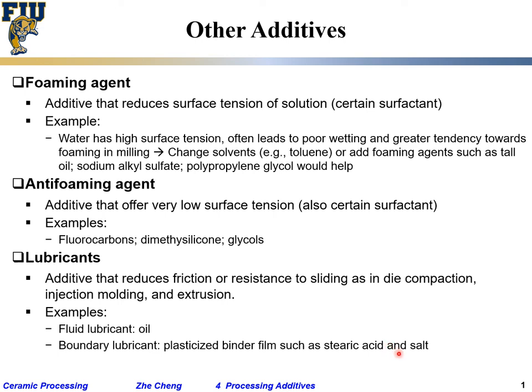Some lubricants are inorganic materials. A solid lubricant could be molybdenum disulfide — that's quite often used. Boron nitride can also be used as a solid lubricant, or of course, graphite flakes.